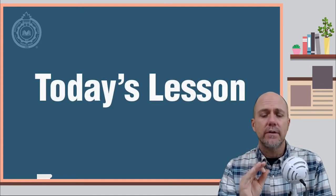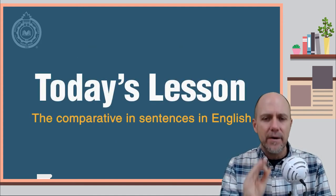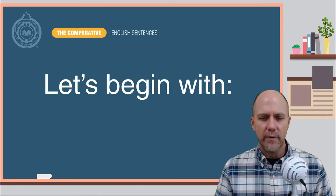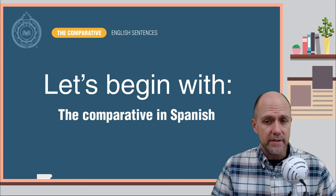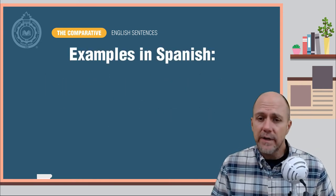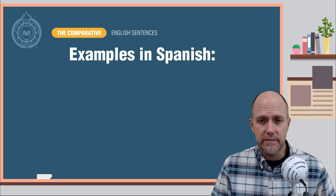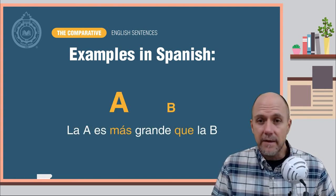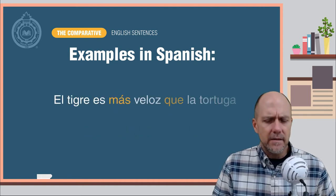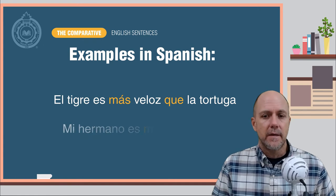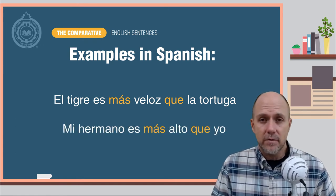Let's begin with what you already know, the comparative in Spanish. In Spanish, the following are examples of the comparative: La A es más grande que la B. El tigre es más veloz que la tortuga. Mi hermano es más alto que yo.